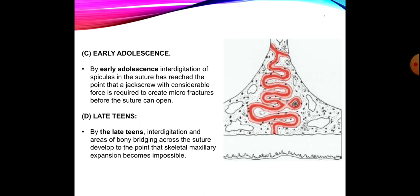In late teens, the suture maturity and interdigitation has reached a point where the breakage of the interdigitations cannot be achieved with any device. In this stage we use modified procedures or surgical procedures in order to provide expansion. The areas of bone bridging have established and skeletal maxillary expansion becomes impossible with simple devices. We'll be proceeding with surgery, which I'll discuss in the coming slides.